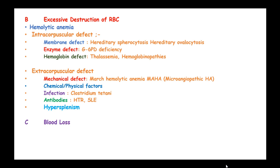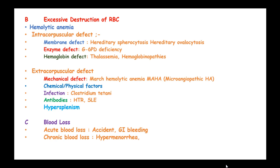Blood loss can be acute or chronic. Acute blood loss results from accidents and gastrointestinal bleeding, while chronic blood loss results from hypermenorrhea and parasitic infestations.